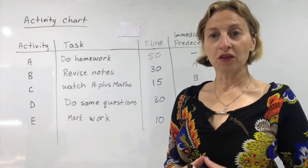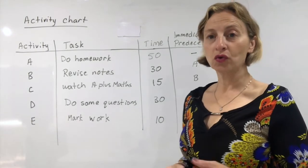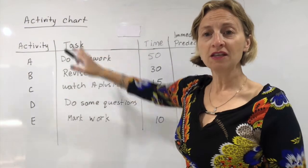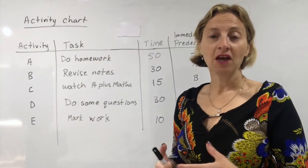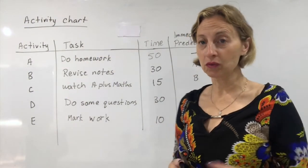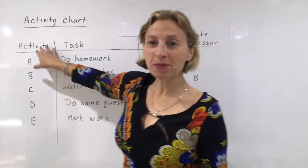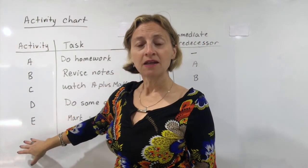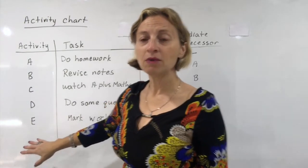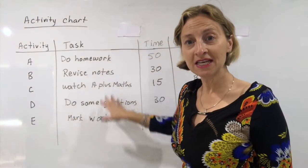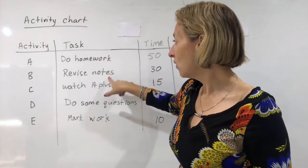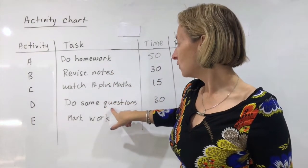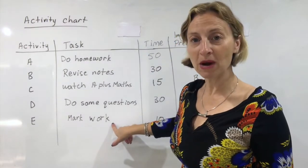The last type of chart that we can use to draw a weighted network is called an activity chart. This is much more specific than the other graphs I showed you. These will tell you that you have particular activities A, B, C, and D. Sometimes it will tell you what the activity is. So here we're doing homework, revising notes, watching one of my videos, doing some more questions, and then marking your work.